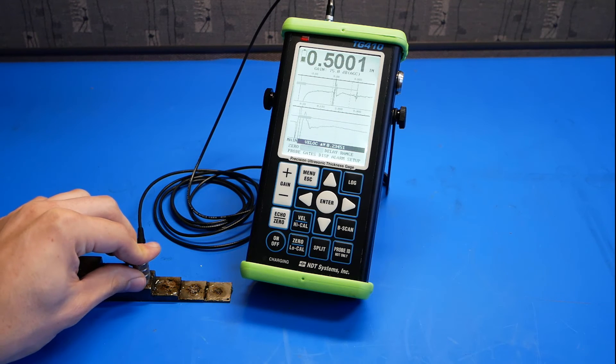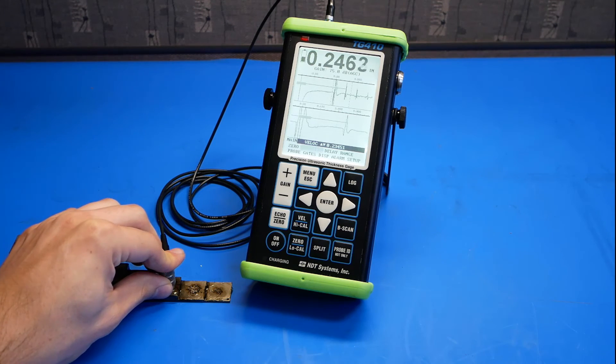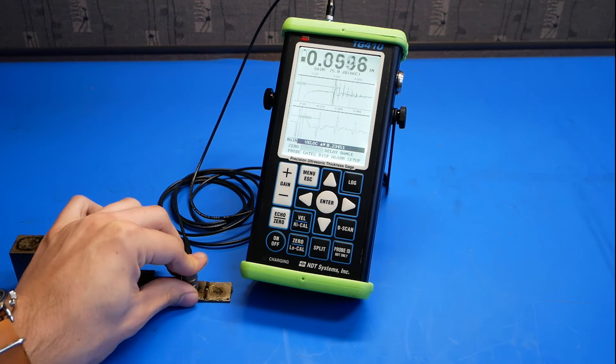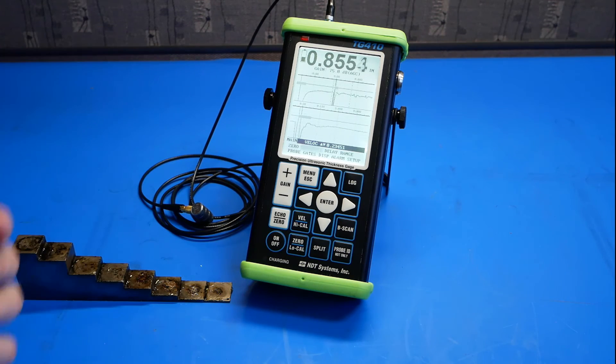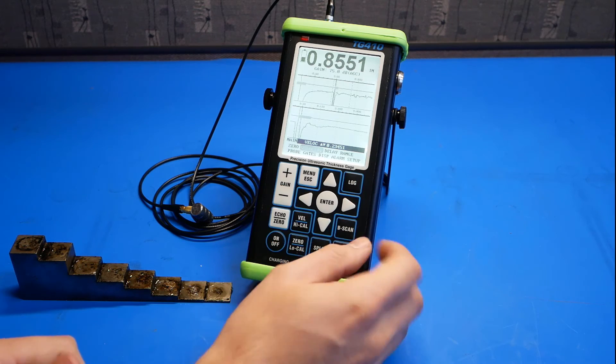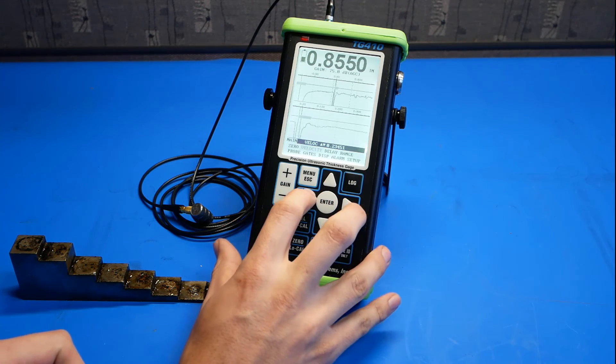And if we measure across the block, we can see that our values are within expectation. Now, if we have a probe that isn't contained in the setup files, we can go ahead and set it up manually.